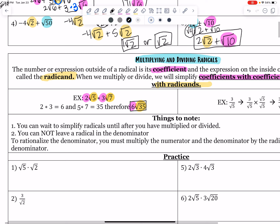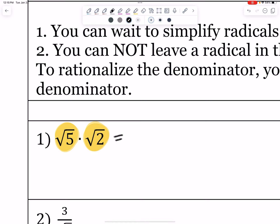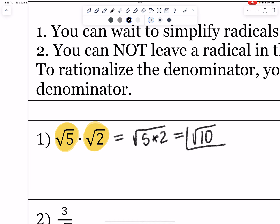You can wait to simplify radicals until after you have multiplied or divided — that way you're only doing it once. For problem 1, I have radicands both under a radical, so I multiply them together: root 5 times root 2 becomes root 10. My final answer is root 10.